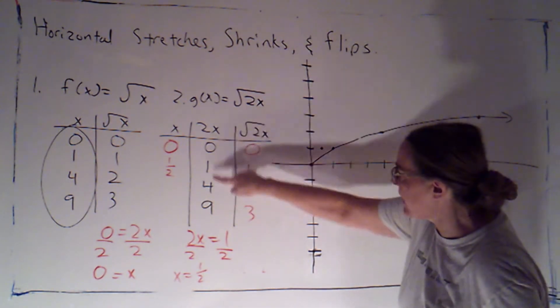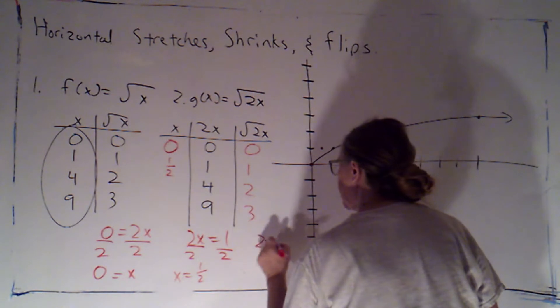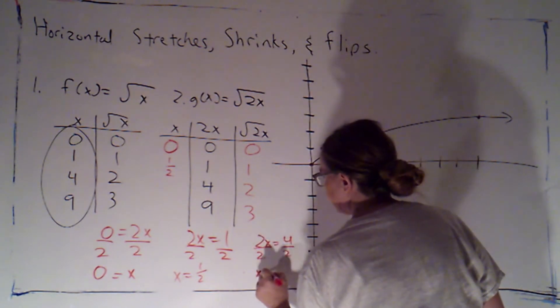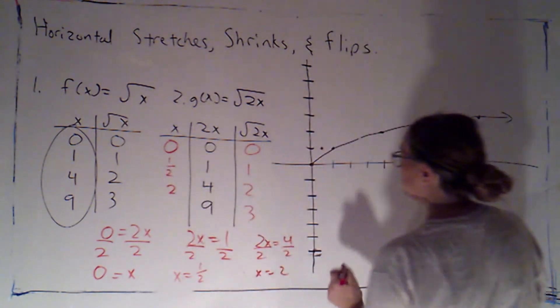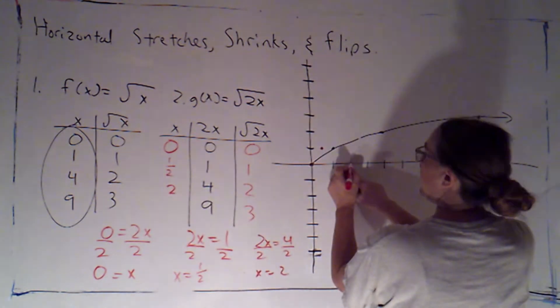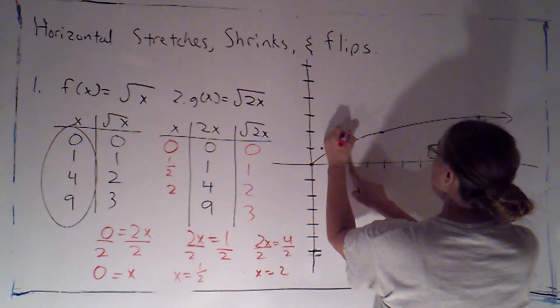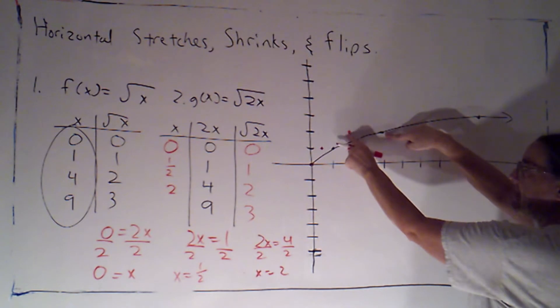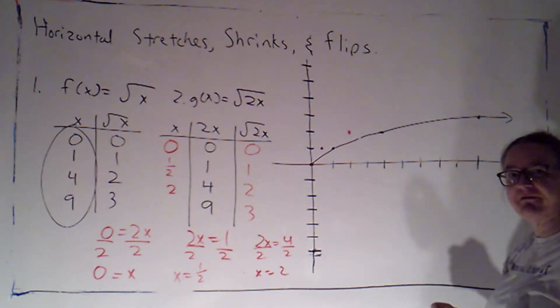All right, now here 2x is equal to 4. Solving for x, I get x is equal to 2. So I'm going to have a point at (2, 2). Again, that has the same y value as this point (4, 2) that was on the parent graph, but the x value is half as big.